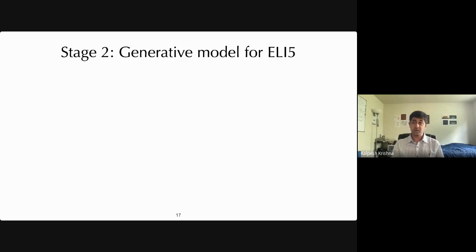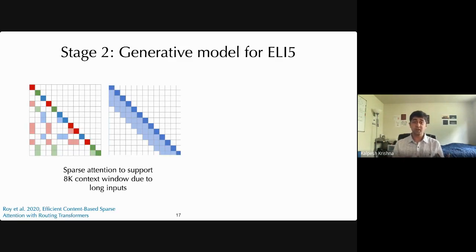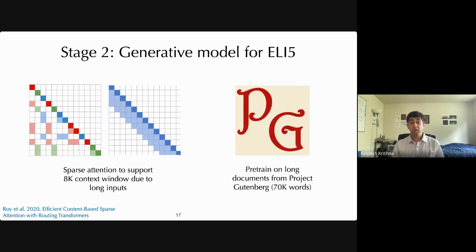So moving on to the next part, our generative model. So since our inputs are a concatenation of several retrieved documents, they can get quite long and expensive to store in memory. As a result, we use a sparse attention model to attend over this long sequence of text. We use a routing transformer model from Roy et al. 2020, which clusters similar tokens together for self-attention. This model supports a context window of 8,000 tokens, which is long enough for all our applications. Additionally, we pre-trained this model on documents from the Project Gutenberg 19 benchmark, which is a number of novels having about 70k words per story. This really encourages the model to generate long sequences of text, before a final step of fine-tuning on ELI5 data.